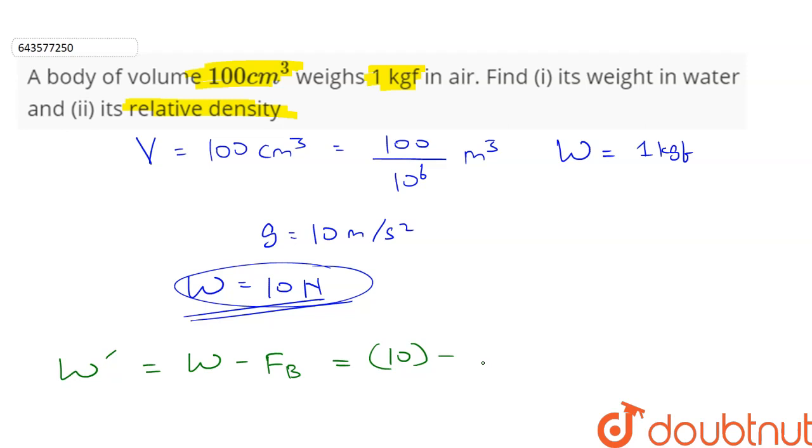Therefore it is ρw into g into volume of fluid displaced. The volume of fluid displaced, Vd, is equal to the volume of body V. Therefore this is equal to V.